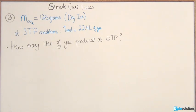In this example we have dry ice. Dry ice is carbon dioxide that's present at a really low temperature. The mass of carbon dioxide is 125 grams. The question states, how many liters of gas is produced at STP?